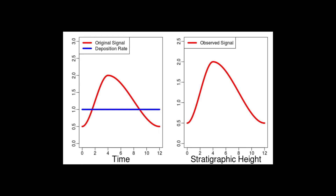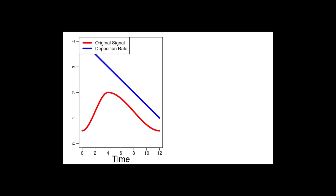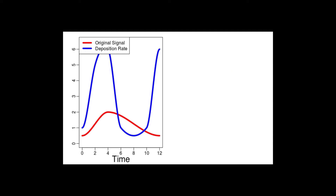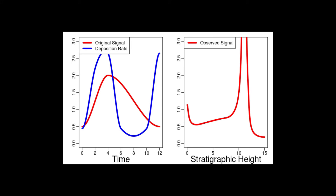When the deposition rate is constant, the observed signal is identical to the original signal — the best possible case. In a more complex case where the deposition rate drops drastically, the pattern we observe in the outcrop is very different from the original signal, and it is not clear what happened to the maximum. As a third example, with drastic changes in deposition rate — at one point very high, at another very low — the same original signal, when transformed into stratigraphic height, shows a very different pattern. There is a drastic spike generated by condensation caused by a low deposition rate, making it hard to identify which parts of the observed signal reflect the original.